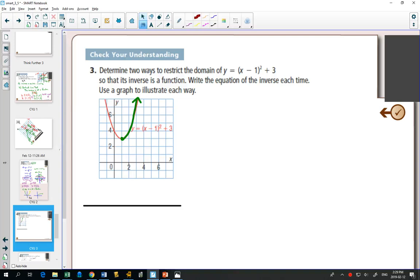Well, I'm going to put a number one because it says determine two ways. So the first way is the green side. How is my domain restricted? I'm only looking when x is bigger than or equal to 1. So this would be a restricted domain. Now we want to write the equation of the inverse for this. How do we find an equation of an inverse? We switch the x and the y.